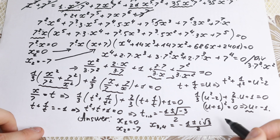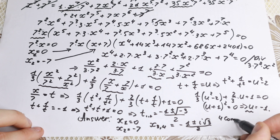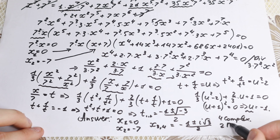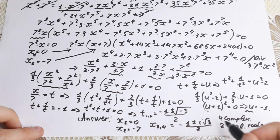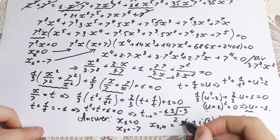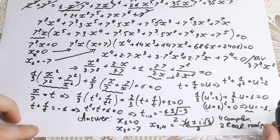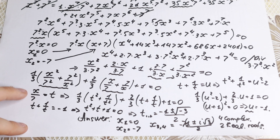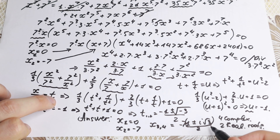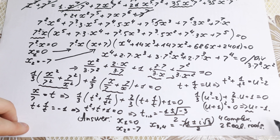So our final answer has 2 real roots and 4 complex roots. The real roots are x₁ = 0 and x₂ = -7. The 4 complex roots come from the quartic factor. Remember to multiply by 7 because of our substitution x/7 = t, giving x₃,₄ = 7·(-1 ± i√3)/2, with multiplicity 2 each.